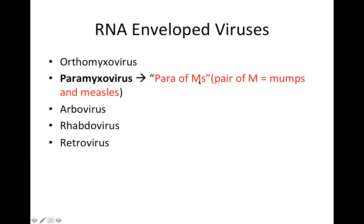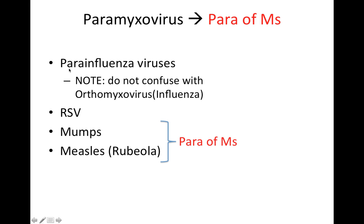I wrote here 'para of Ms.' If you look at the first five letters, you see 'para M.' So 'para of Ms' is what I'm going for on this one. We're going to have mumps and measles as part of this discussion — that helps you remember that measles and mumps fall within that virus. We've got parainfluenza virus, RSV, mumps, and measles, also known as rubeola.